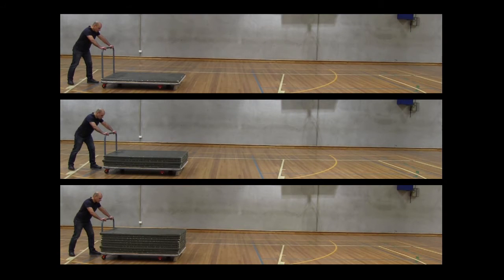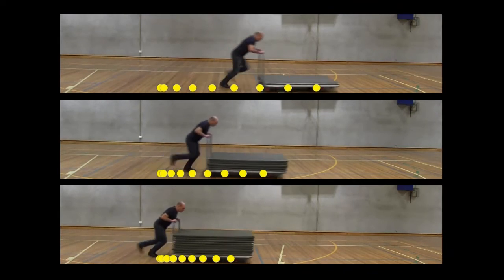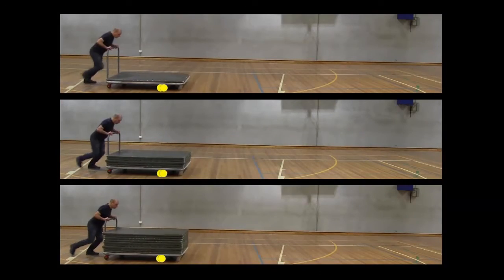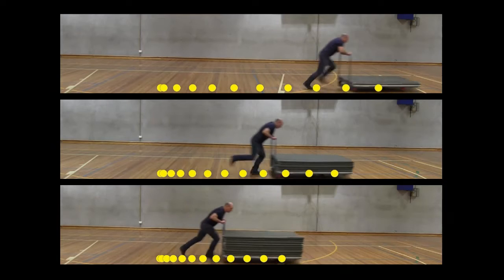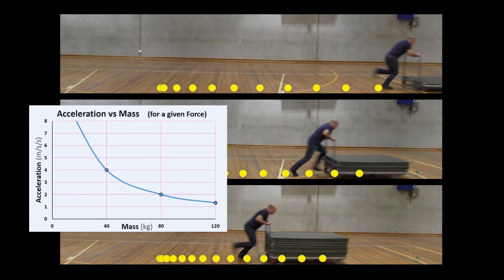It's quite clear that for any given force, a larger mass will accelerate at a lower rate than a smaller mass. This graph shows the relationship. As the mass gets bigger, the acceleration gets smaller. This is called an inverse relationship.